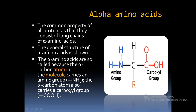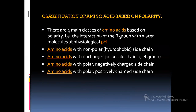The alpha carbon atom also carries a carboxyl group, which is the reason we call these amino acids as alpha amino acids. Coming to the classification of amino acids, they are classified in two categories: one based on the polarity of the R group attached to the alpha carbon, and next based on the essentiality of the amino acids to the human body.